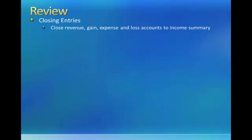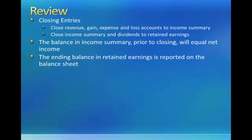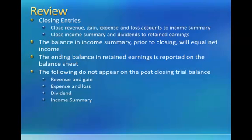The closing entries include closing revenue, gain, expense, and loss accounts to income summary, and closing the income summary and dividend accounts to retained earnings. The balance in income summary prior to closing will equal net income. The ending balance in retained earnings is reported on the balance sheet, and it will not change until you do your closing entries for the next accounting period. So this period's ending retained earnings balance will equal next period's beginning retained earnings balance. The following do not appear on the post-closing trial balance: revenues and gains, expenses and losses, dividends, and income summary — these are all considered temporary accounts and get closed out at the end of each accounting period.